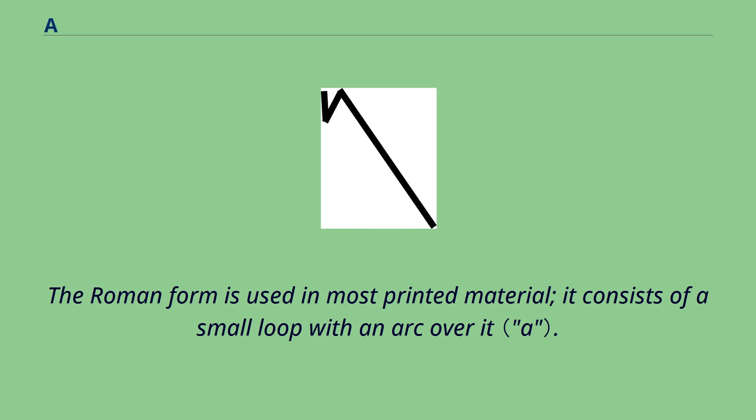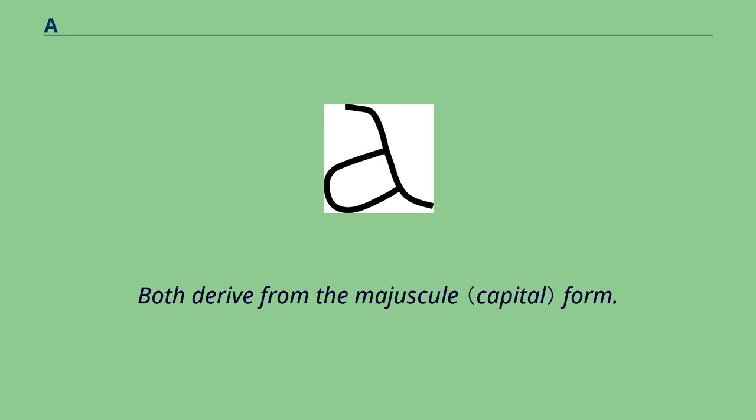The Roman form is used in most printed material. It consists of a small loop with an arc over it. Both derive from the majuscule form.